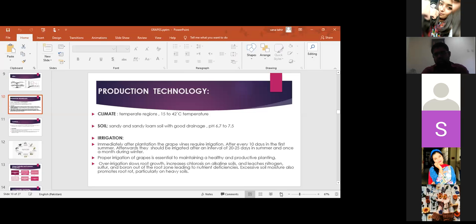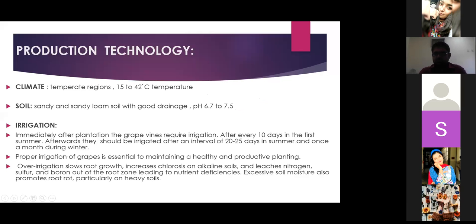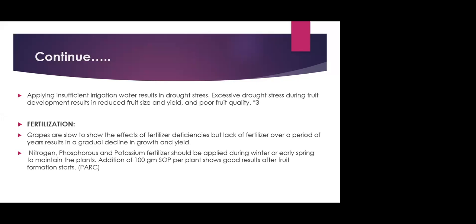Over-irrigation can cause root problems and improper root growth. If there is insufficient irrigation, drought stress will affect fruit quality.